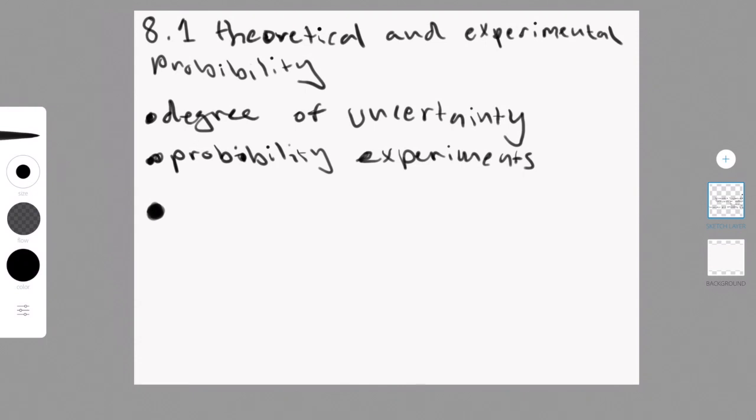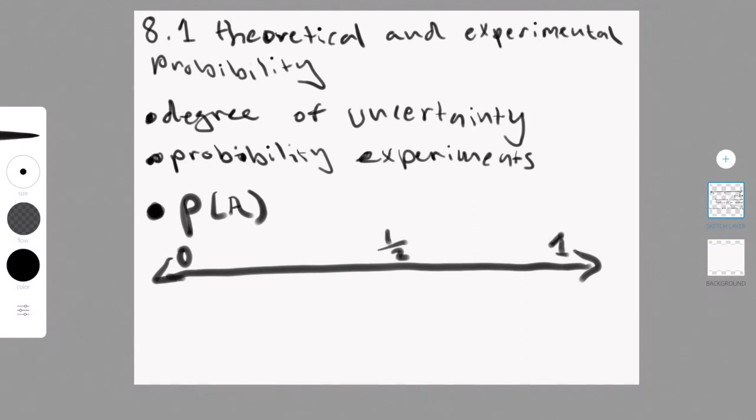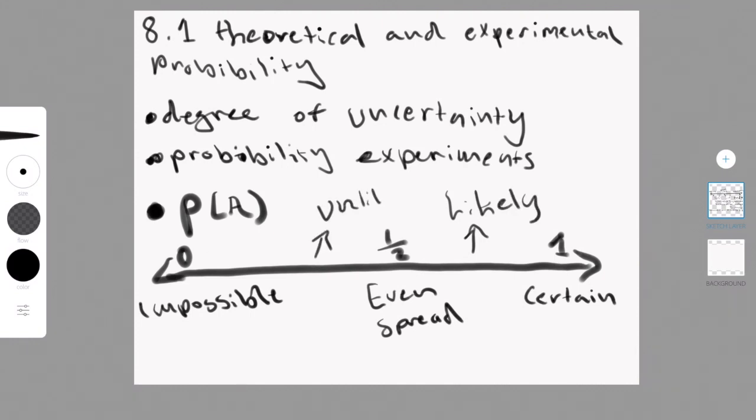So some of the notation in this unit is P of A. The P stands for the probability of and then on the inside it'll be the event. And in this case it's event A. There are also some words that you can use to describe the probability. So if you look at it from a scale from 0 to 1, you can use the words impossible, unlikely, even chance, likely, certain.